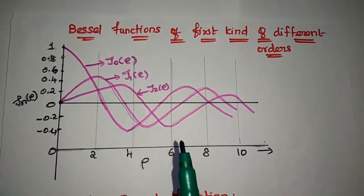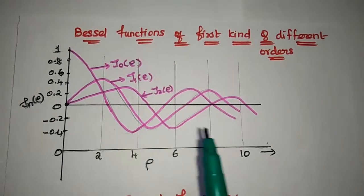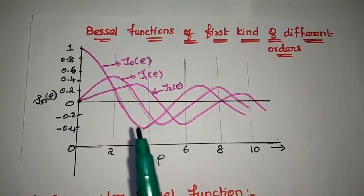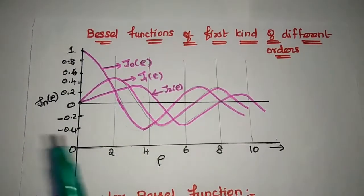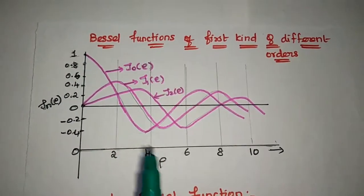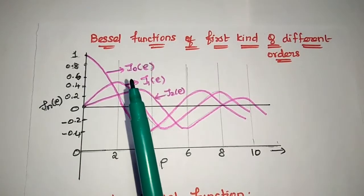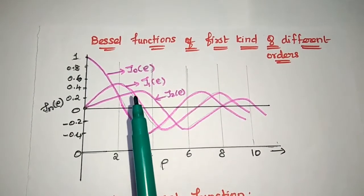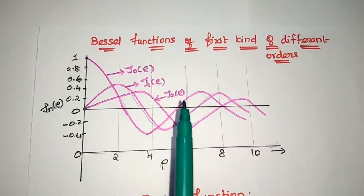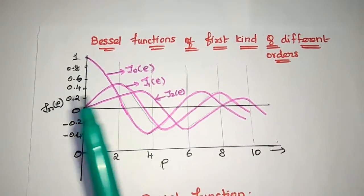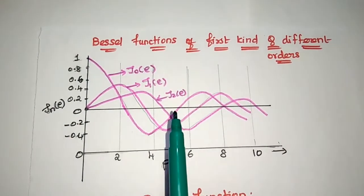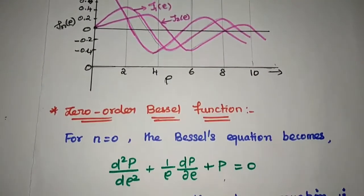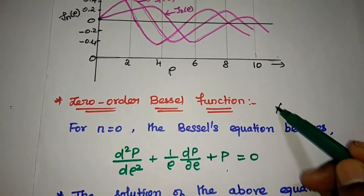This is the Bessel function of the first kind for different orders. We can draw a graph between the Bessel functions and the rho value. The zero-order Bessel function is J₀(ρ), followed by J₁(ρ) and J₂(ρ). The amplitude value decreases as the order increases.